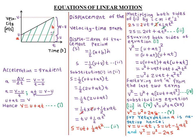So the three equations of linear motion — where linear means movement in a straight line — are: (1) v = u + at; (2) s = ut + one-half at squared; (3) v squared = u squared + 2as. These equations apply to uniformly accelerating bodies. For a uniformly decelerating or retarding body, acceleration becomes negative.